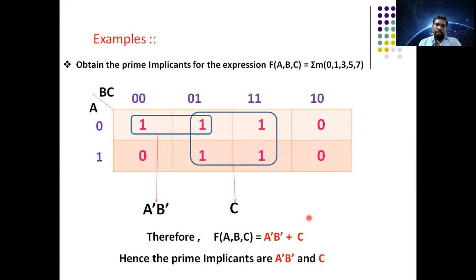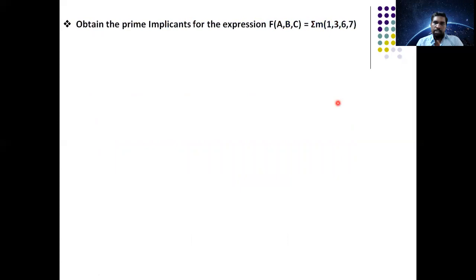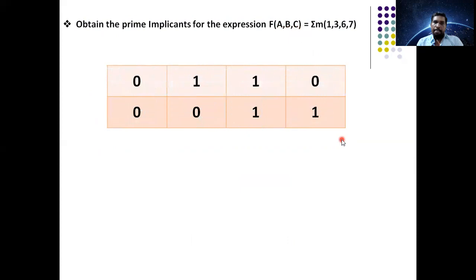Simple problem. After simplification of the K-map, you get a minimized expression, and all the terms in that minimized expression are called prime implicants. Next, we will see another question: obtain the prime implicants of the given expression. Here also we have three inputs, so take an eight-cell K-map. Replace given cell numbers with 1, and the rest with 0.